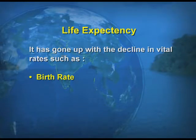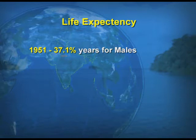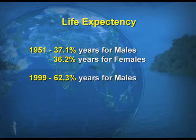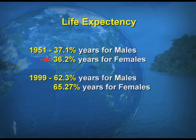Life expectancy — the average number of years a person survives — has gone up with the decline in vital rates such as birth rate and fertility. In 1951, life expectancy for males was 37.1 years and for females 36.2 years. By 1999, this rose to 62.3 years for males and 65.27 years for females, showing significant improvement.